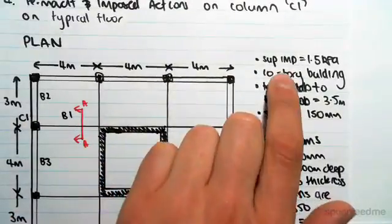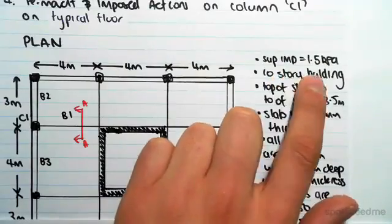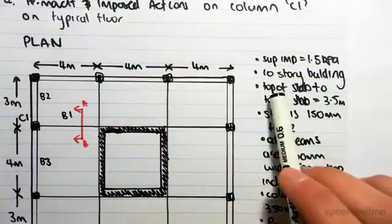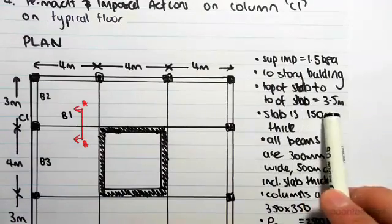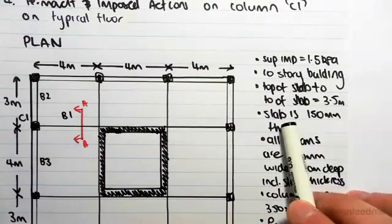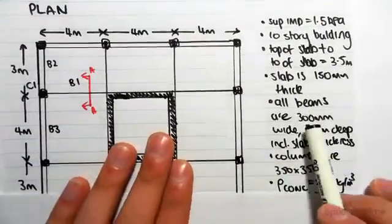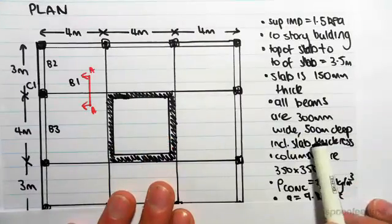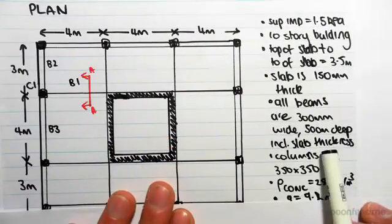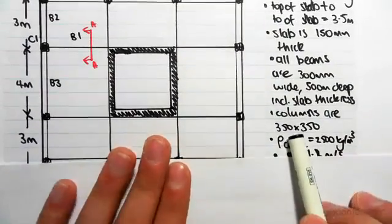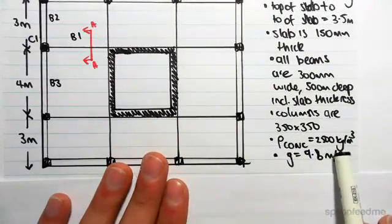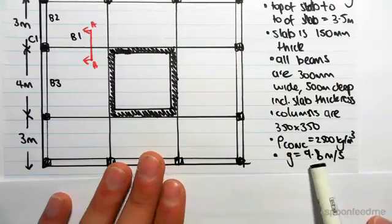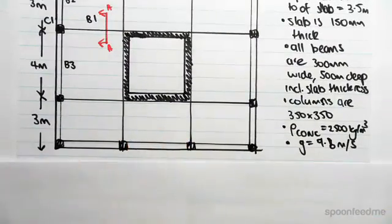Just some information: the superimposed dead load is 1.5 kPa, it's a 10-story building, the top of slab height is 3.5 meters, the slab is 150 mm thick, all beams are 300 wide by 500 deep including the slab thickness, columns are 350 by 350, density of concrete is 2,500 kilograms per meter cubed, and gravity is 9.8 meters per second squared.